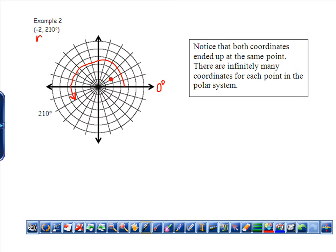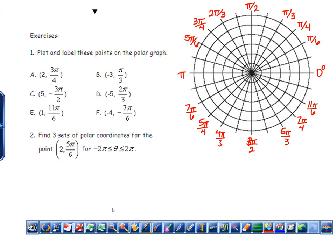We have 0, the polar axis, we're going to go 210 degrees. But then we're going to go in the opposite direction from the pole. You could call these polar opposites. It's half a circle, it's back. So notice that these both ended up at the same points, and in fact there are infinitely many coordinates.